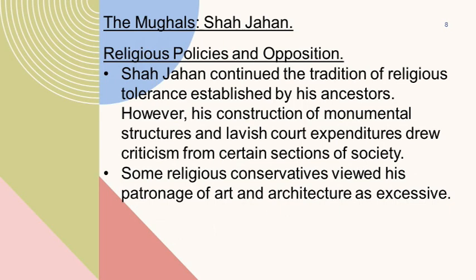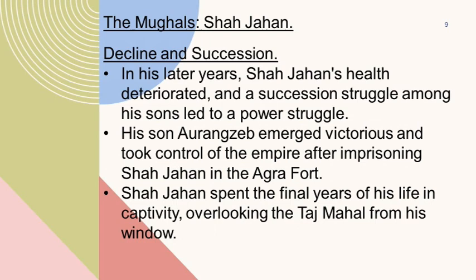In his later years, Shah Jahan's health deteriorated, and a succession struggle among his sons led to a power struggle. His son Aurangzeb emerged victorious and took control of the empire after imprisoning Shah Jahan in the Agra Fort. Shah Jahan spent the final years of his life in captivity, overlooking the Taj Mahal from his window.